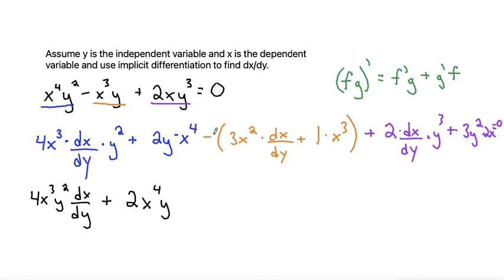I just put the X to the fourth in front to make it in alphabetical order. And then distributing the minus to each term here would be minus 3X squared dx/dy.